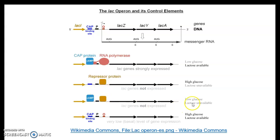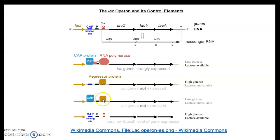Under conditions of low glucose and unavailable lactose: low glucose leads to high cyclic AMP, which drives binding of the catabolite activator protein to its site. However, since lactose is absent, no allolactose is produced, so the repressor cannot be relieved from the operator region. Even though the activator protein is present to stabilize RNA polymerase at the promoter, the promoter is blocked by the repressor. Therefore, under low glucose and no lactose, the lac genes are not expressed because RNA polymerase cannot bind.